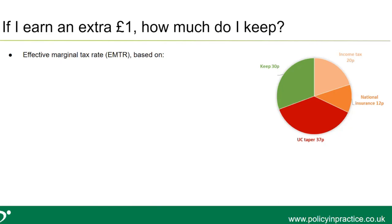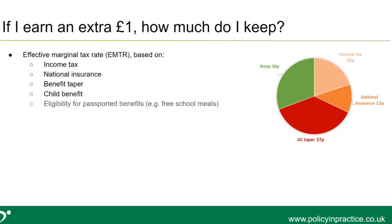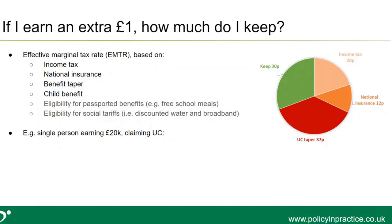EMTRs are based on a range of different inputs. Instead of looking just at the tax system, we bring in the tax and the benefit system — income tax, national insurance, the benefit taper and child benefit withdrawal. What I'm going to talk about today also includes other types of benefits we don't usually see in EMTR estimates: passported benefits like free school meals or Healthy Start, and social tariffs like discounted water and broadband for low-income households. For example, a single person earning £20,000 a year and claiming Universal Credit has an EMTR of 70%, which is different from their average tax rate of 40%.